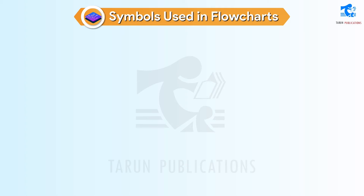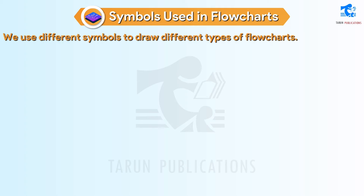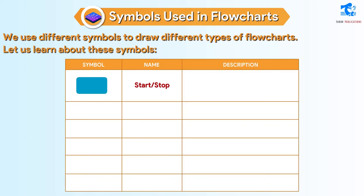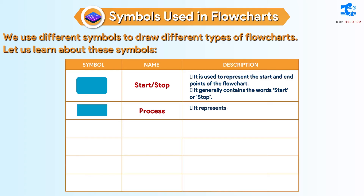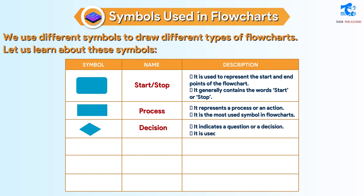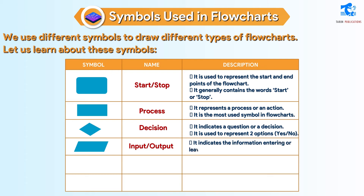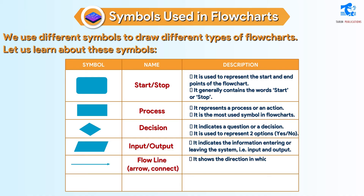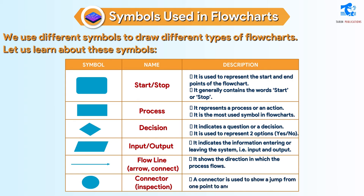Symbols used in flowcharts: we use different symbols to draw different types of flowcharts. Start/Stop: used to represent the start and end points of the flowchart, generally containing the words start or stop. Process: represents a process or an action; it is the most used symbol. Decision: indicates a question or a decision, used to represent two options — yes or no. Input/Output: indicates information entering or leaving the system. Flow Line Arrow: shows the direction in which the process flows. Connector: used to show a jump from one point to another in a flowchart.